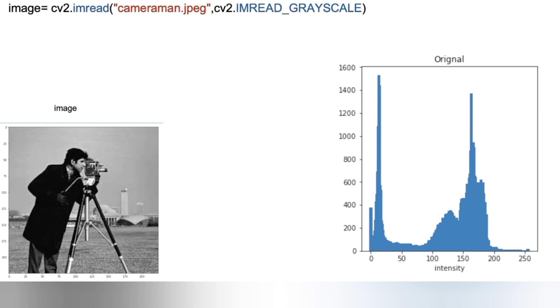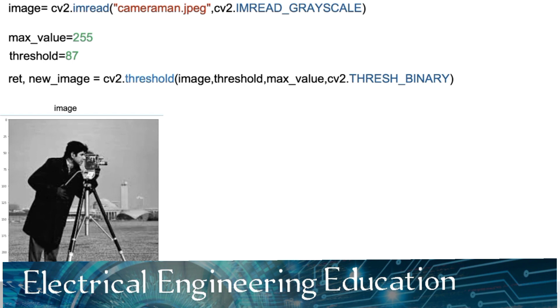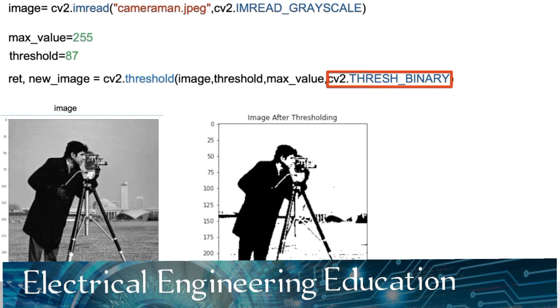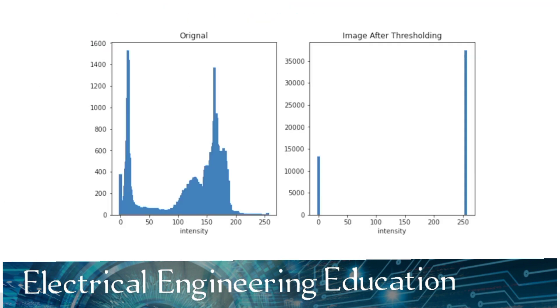Consider the following image. Its histogram is bimodal. We see the cameraman corresponds to the first mode. That is, intensities under 87. The second mode is the background. By setting the threshold accordingly, we can segment the cameraman. We use the function threshold to perform thresholding. The output, new image, is the image after thresholding has been applied. Along with the image ID, the input is the threshold, and the max value is set to 255. The final parameter is the threshold type. In this case, thresh binary. This means the output will be 0 or 255. In the output, we see the camera has 0 values, and most of the background has values of 255. We see the histogram intensities are mapped to black and white after thresholding has been applied.